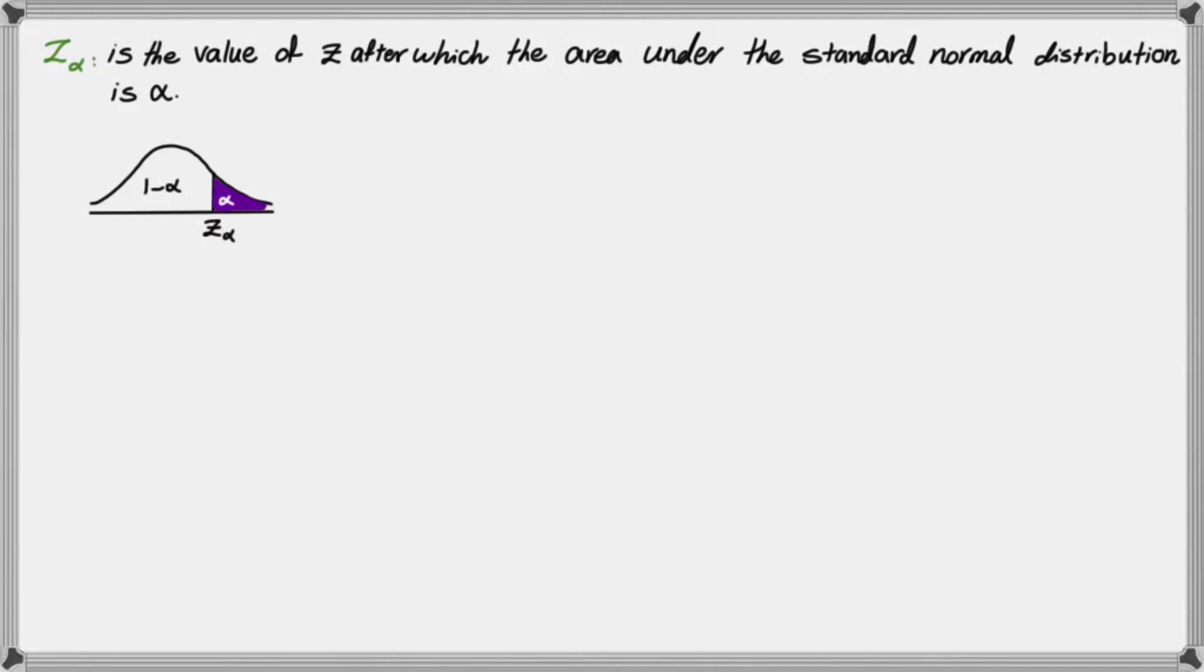And why is this important? Because your standard normal table doesn't give you the area after a point. It always gives you the area before some Z value. So you want to know what is the area before the Z of alpha, so that you can find the value of Z of alpha using your table.